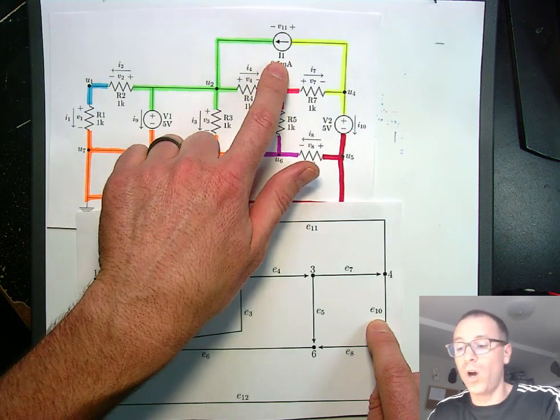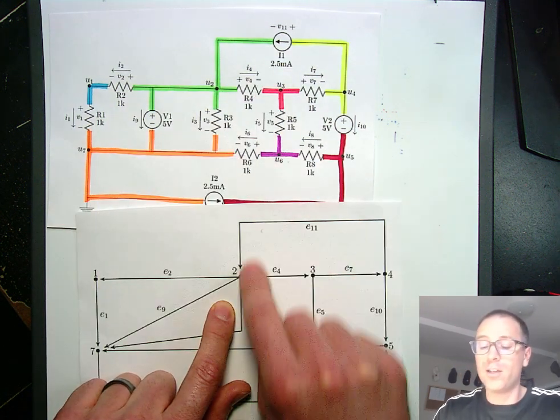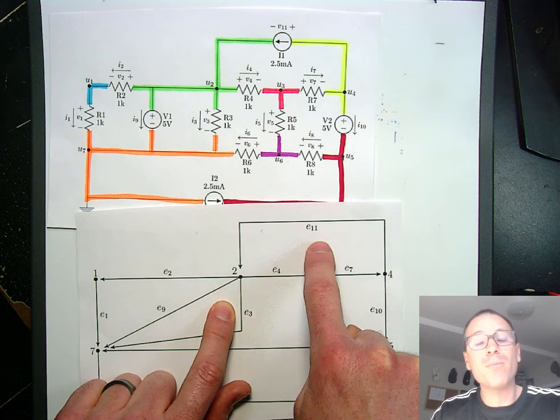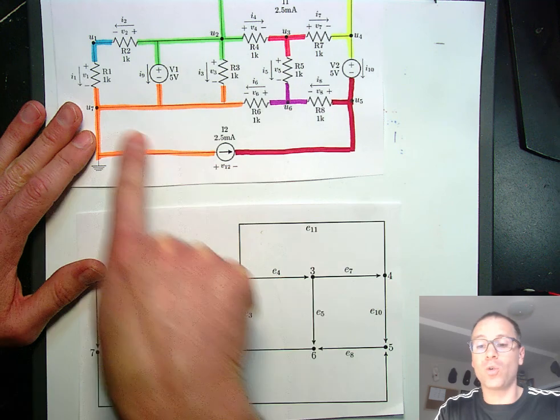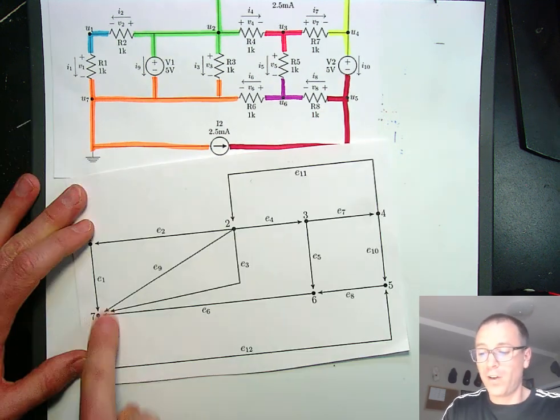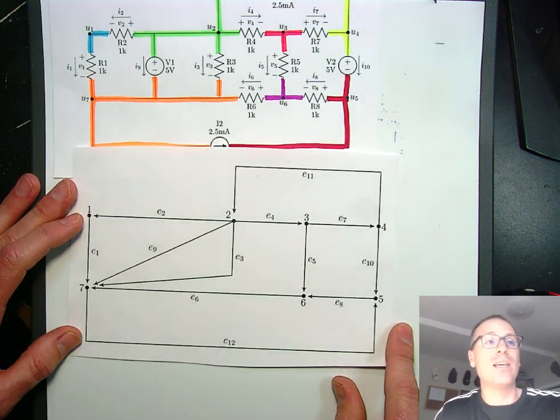Now we've exhausted all the resistors and the voltage sources. The next thing to do is the current sources. We start with current source 1. Current source 1 goes from 4 to 2. We'll call that edge 11 because 10 plus 1 is 11. And then finally, the last current source goes from 7 to 5, which is exactly what we see here.